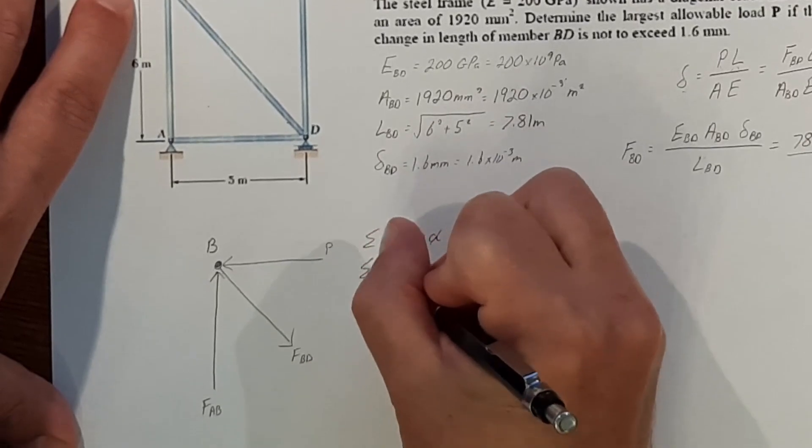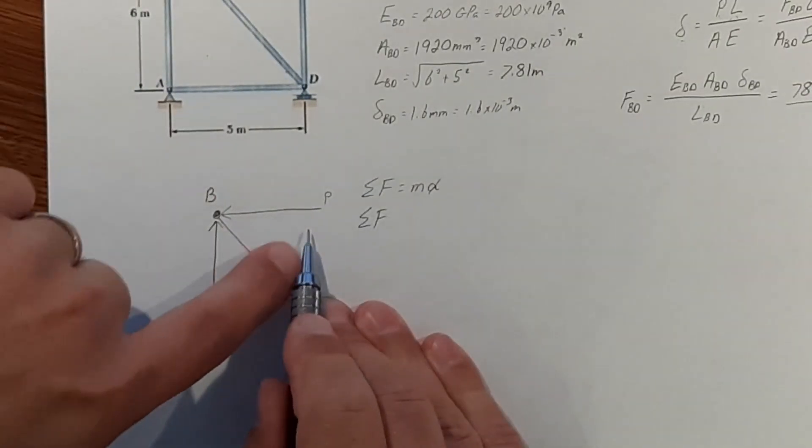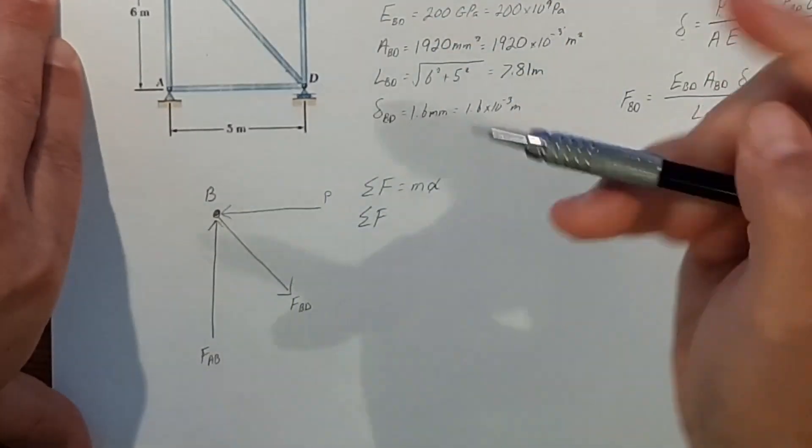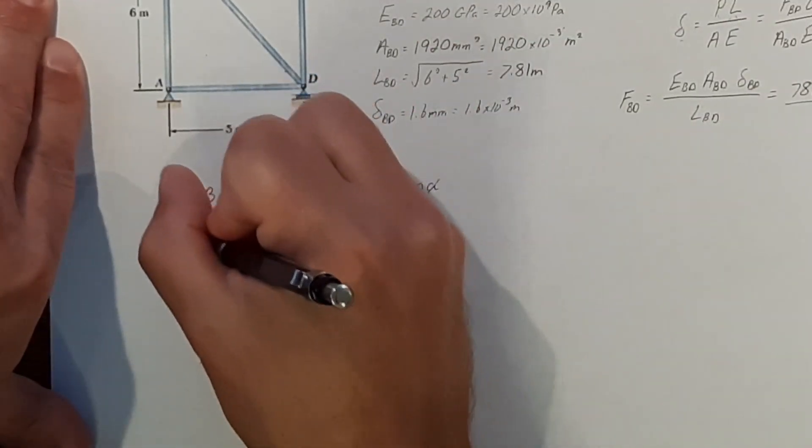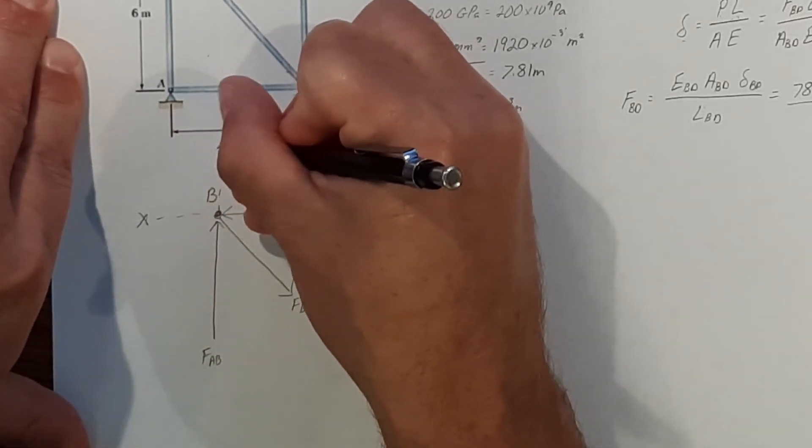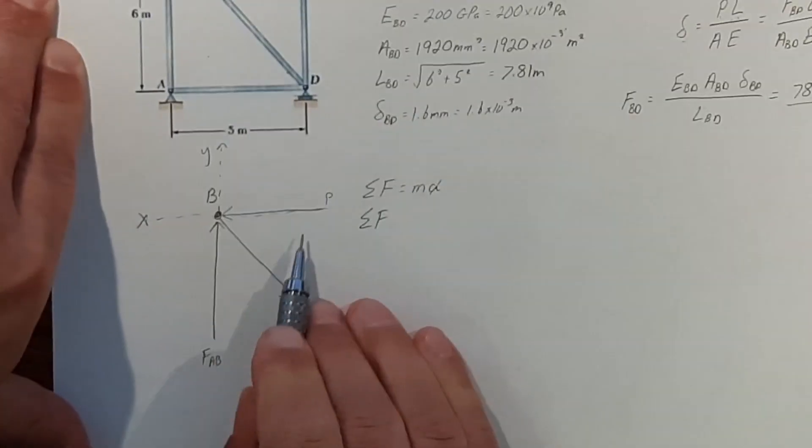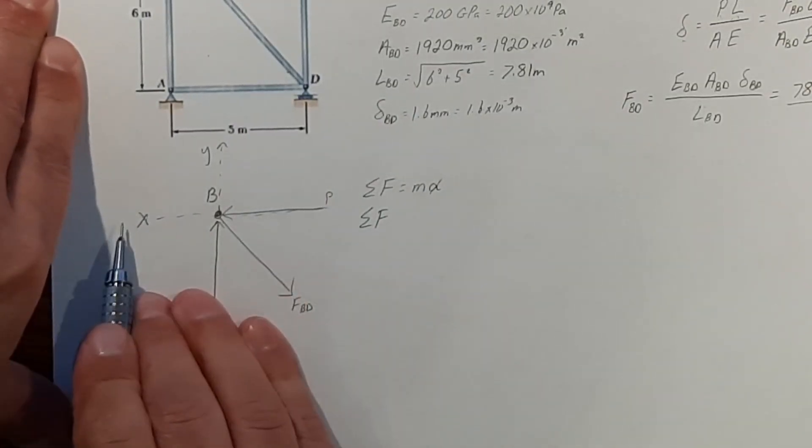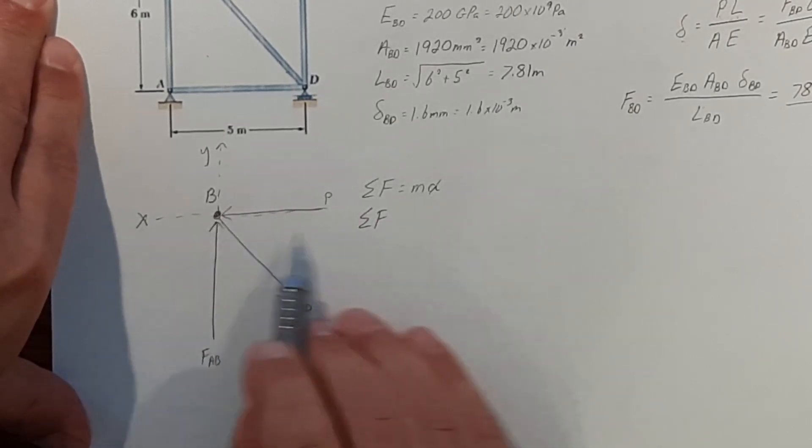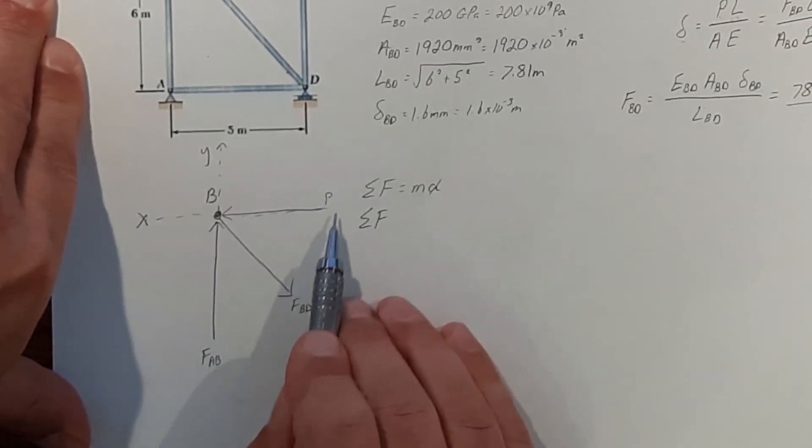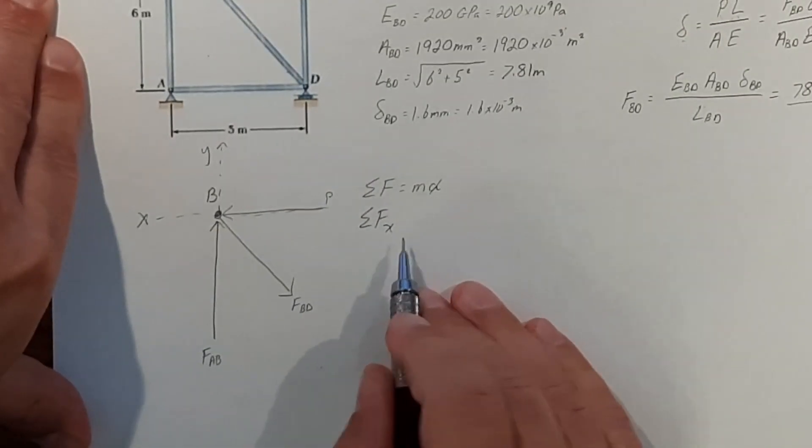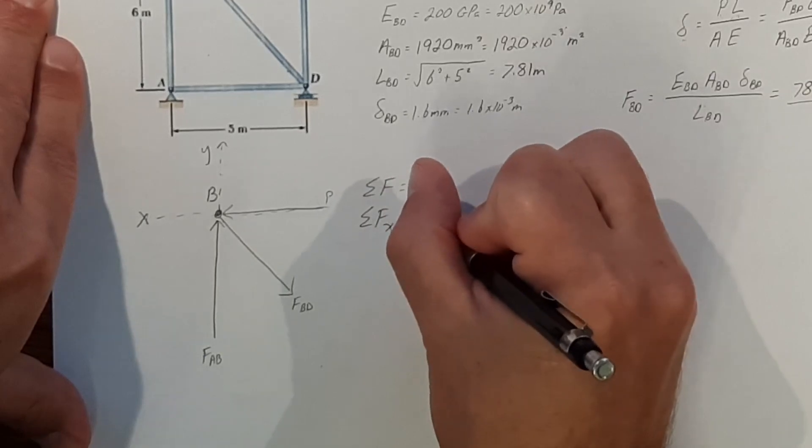So we know the sum of forces. Now we're going to only look in the x direction. This force P is our x and our y. So our force P is only running in the x direction. So nothing in the y direction is going to help me solve this force P. So I'm only going to look for the sum of forces in the x direction, and that should equal zero.